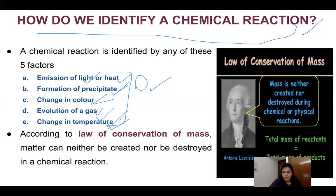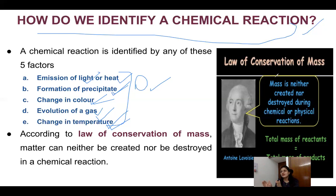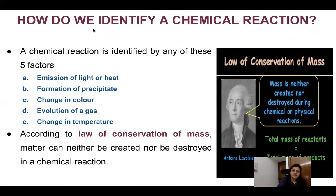After that, we have a scientist Antoine Lavoisier who gave the law of conservation of mass, which was studied in our 9th standard. Mass can neither be created nor be destroyed during any chemical or physical reaction. This means the mass of the reactants will always equal the mass of the products. On this basis, we have to write a balanced chemical equation.